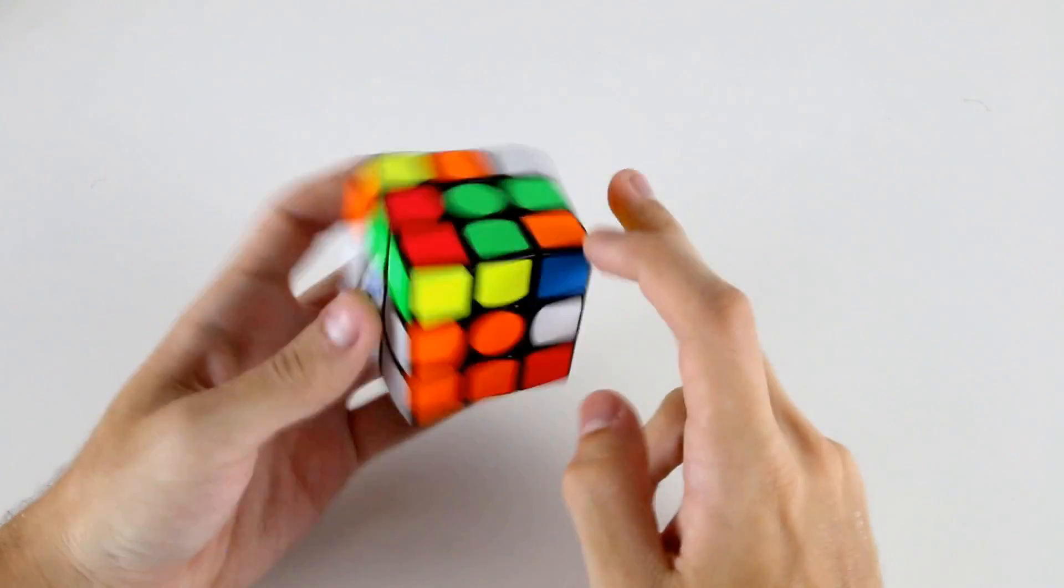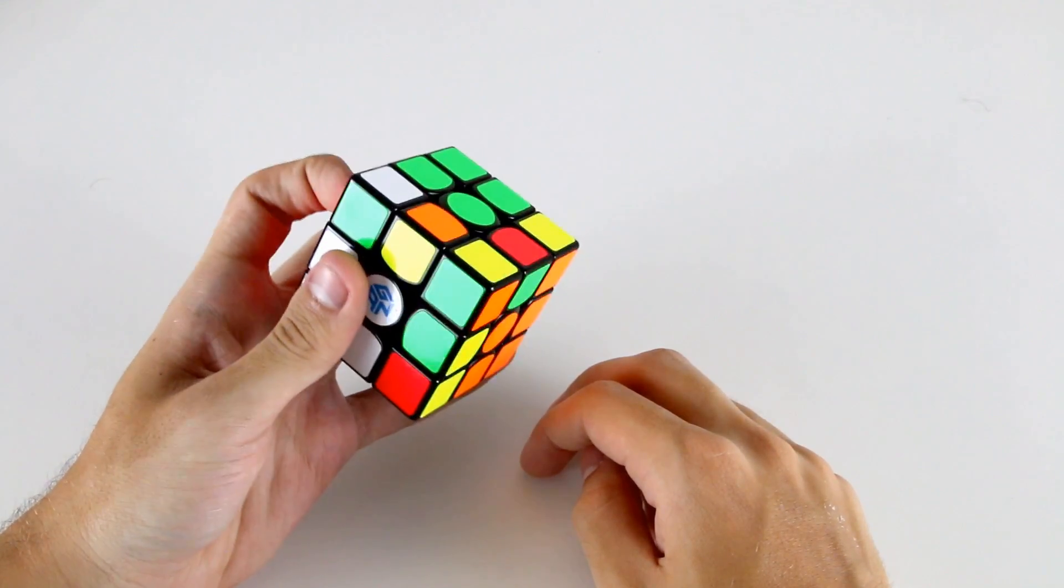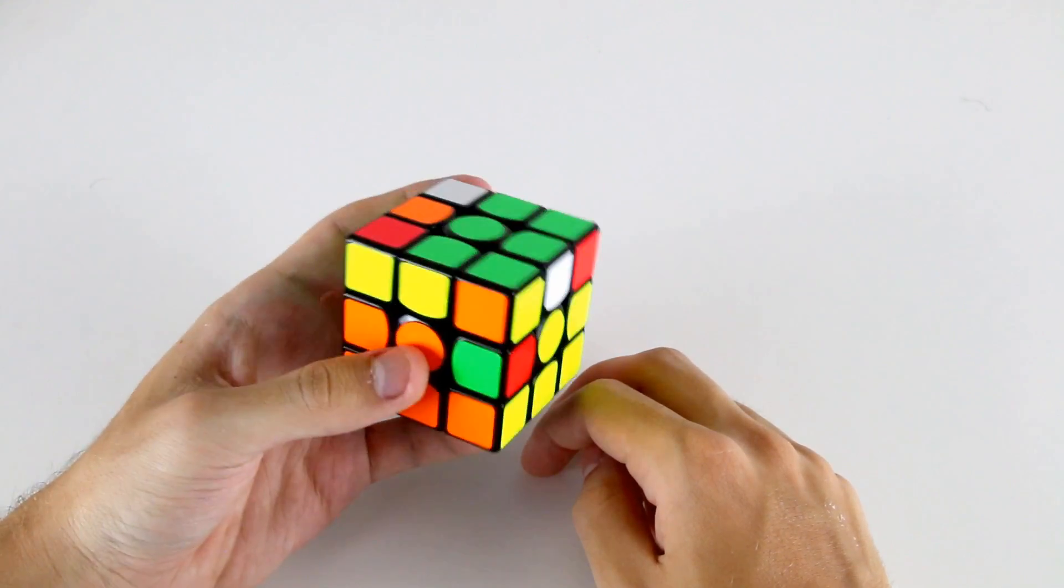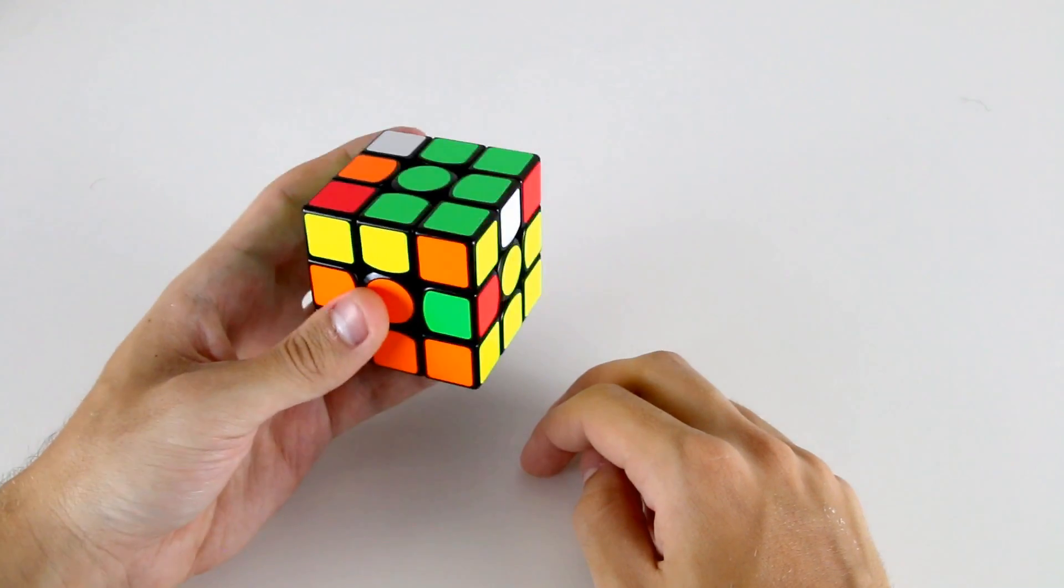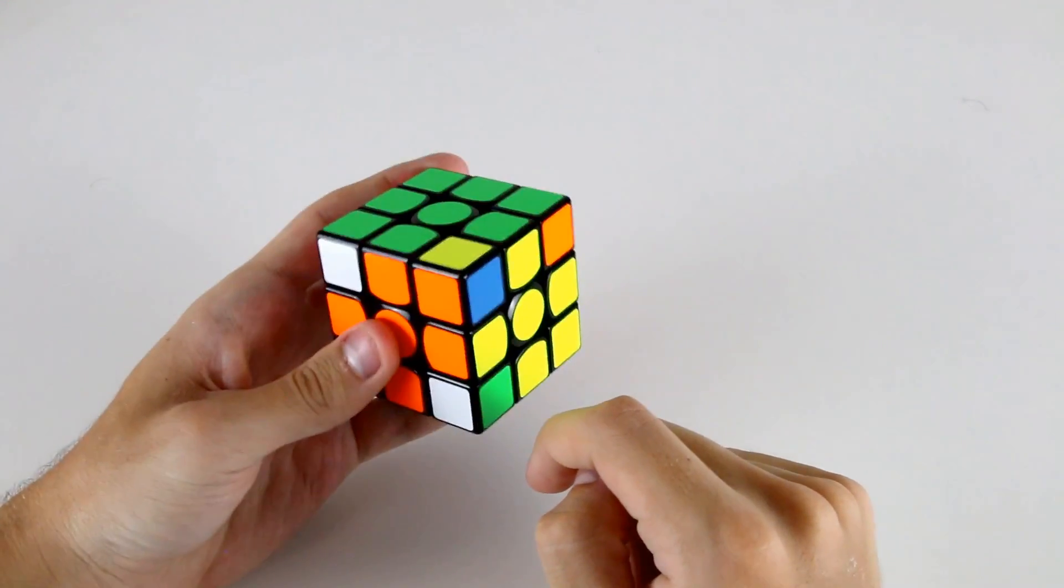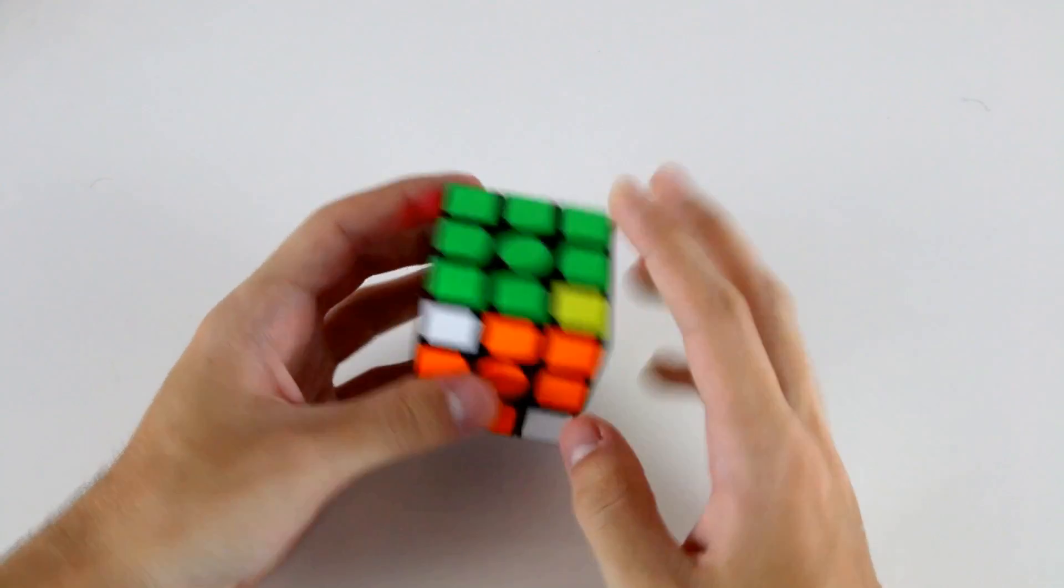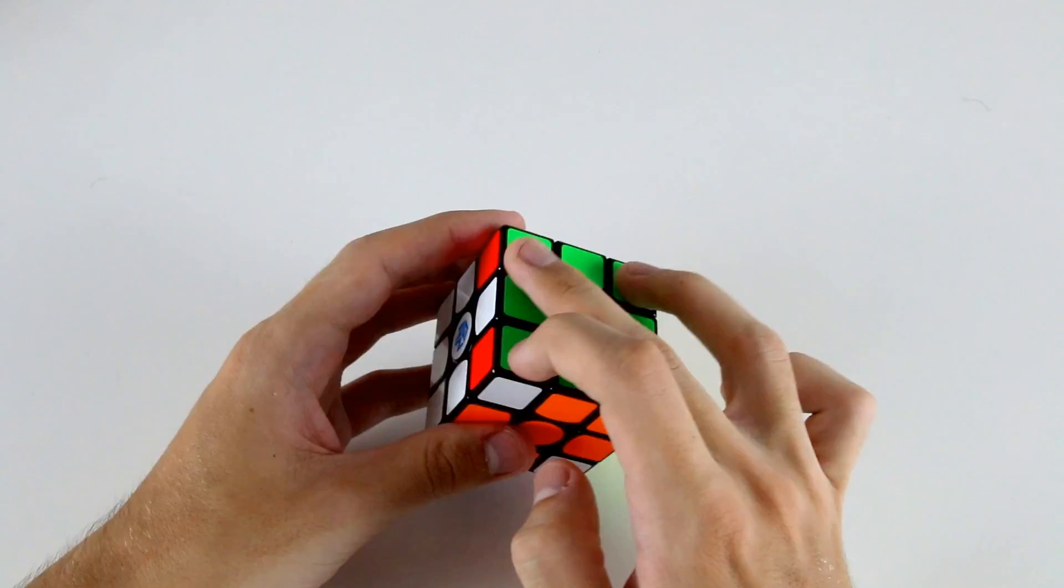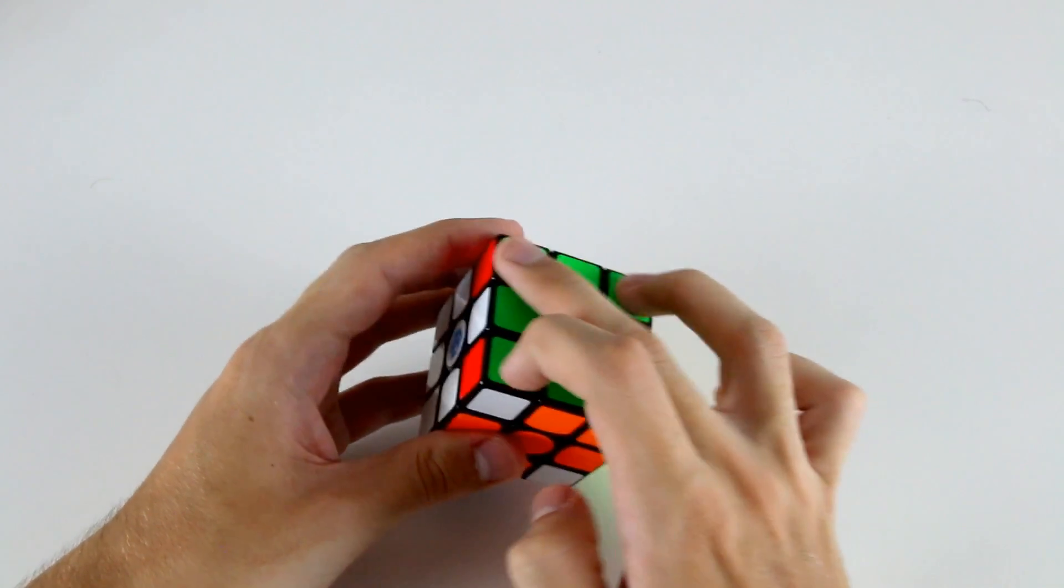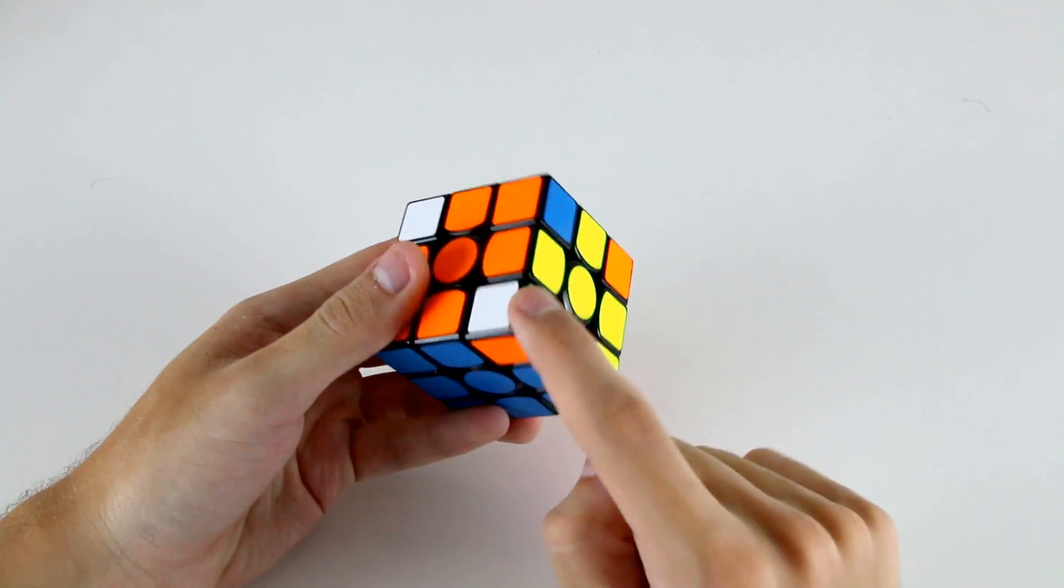Now I've got these two pieces here. What I could do to orient some edges is do something like R prime U prime R. And now I have this case where I can insert the edge. And what I actually have on top is I have a CLS case basically. So all my, actually it's a case where all my last layer corners are oriented except for the final F2L corner and this one down here.